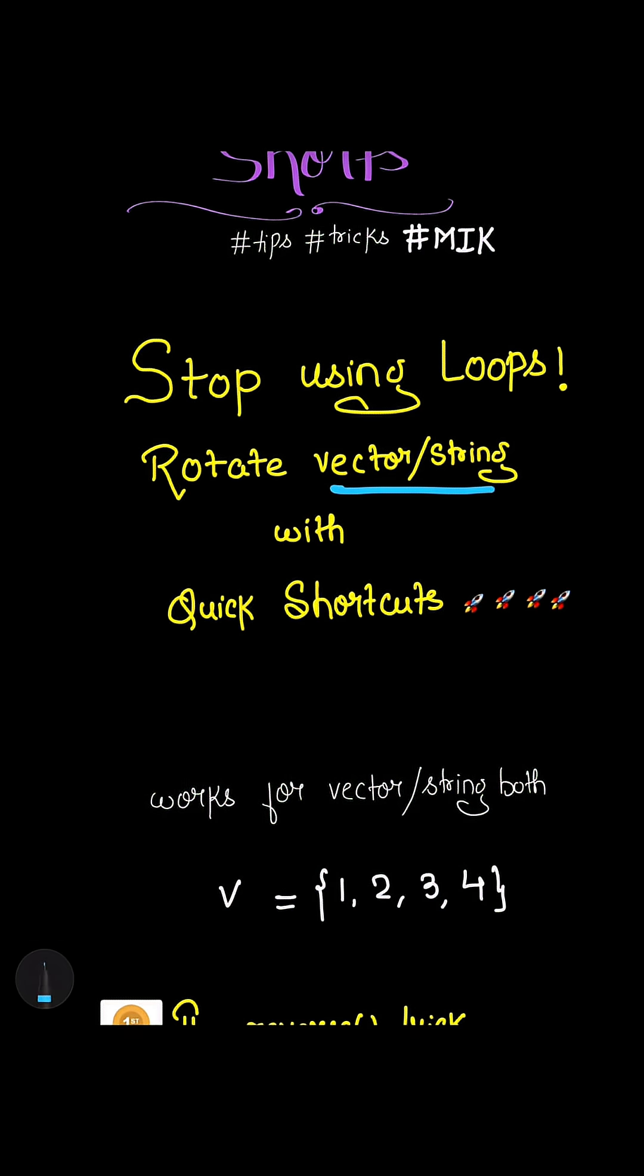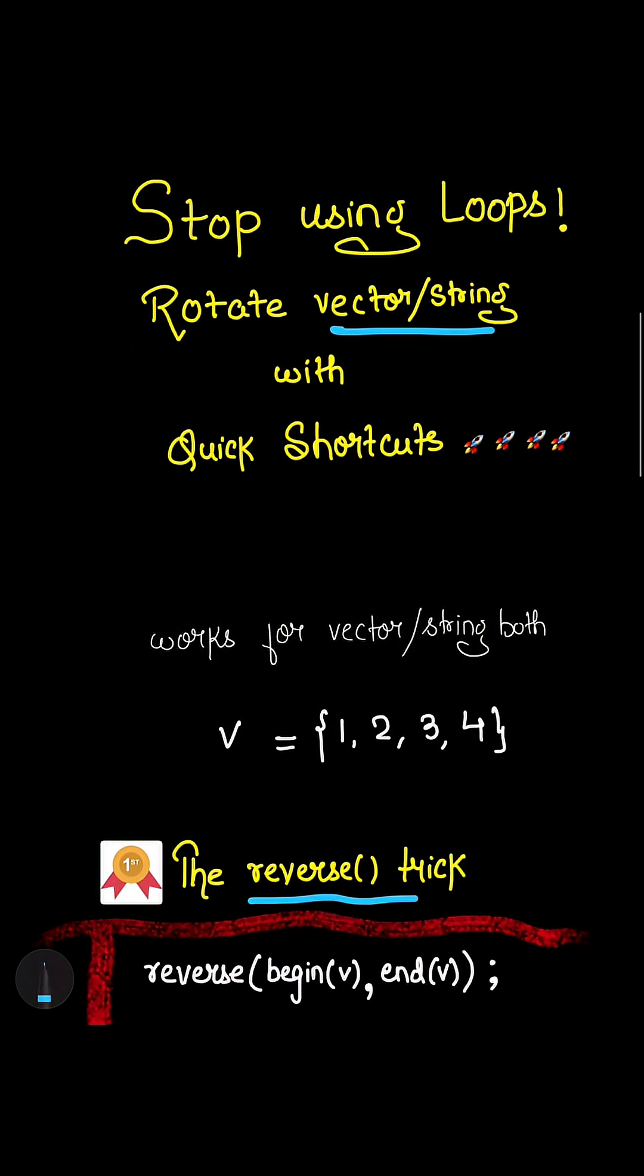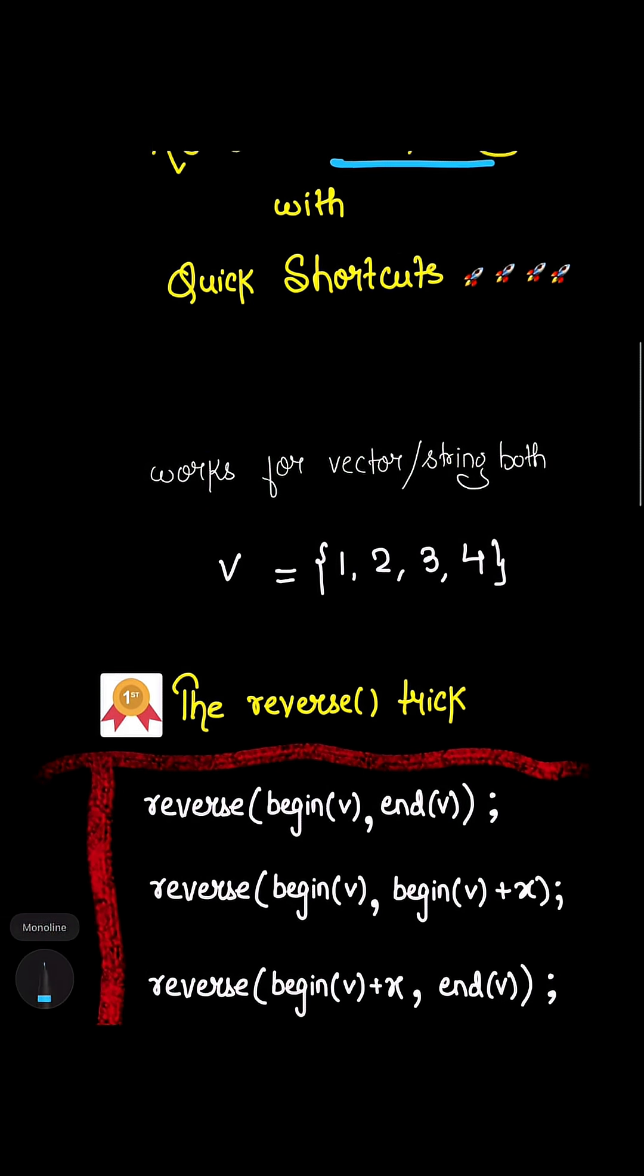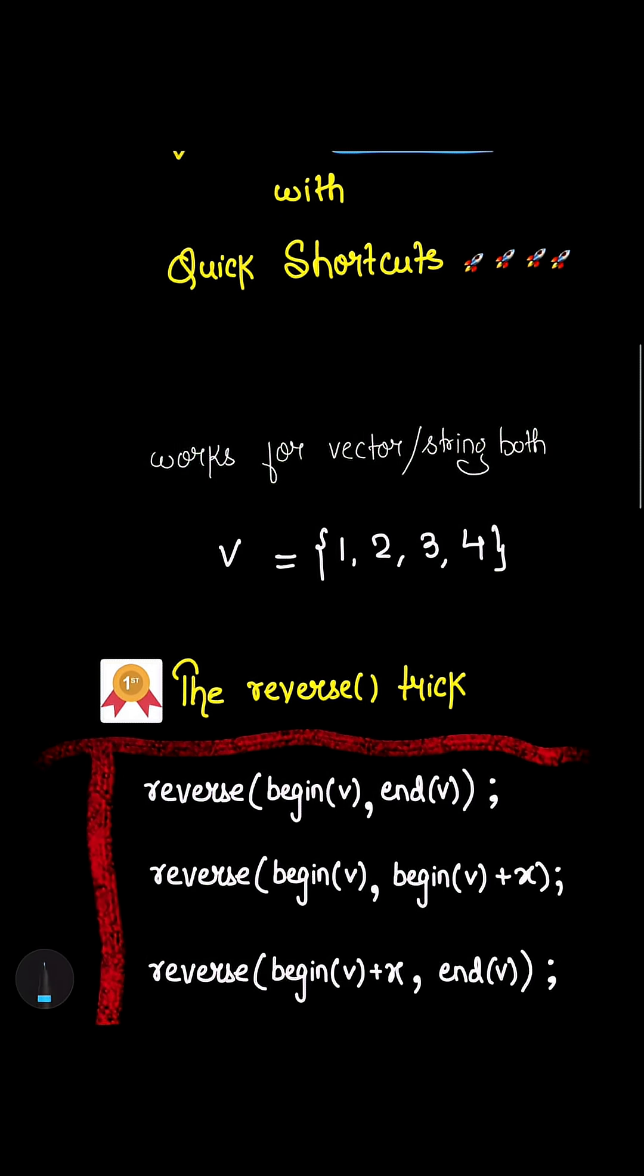Let's take an example of a vector one, two, three, four. The first shortcut is the reverse trick. It's actually a very good way to reverse a vector or a string in a very simple manner.